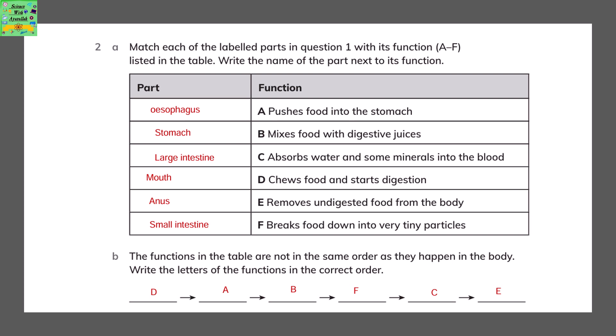Small intestine breaks food down into very tiny particles. The functions in the table are not in the same order as they happen in the body. So the correct order will be D, A, B, F, C, and E.